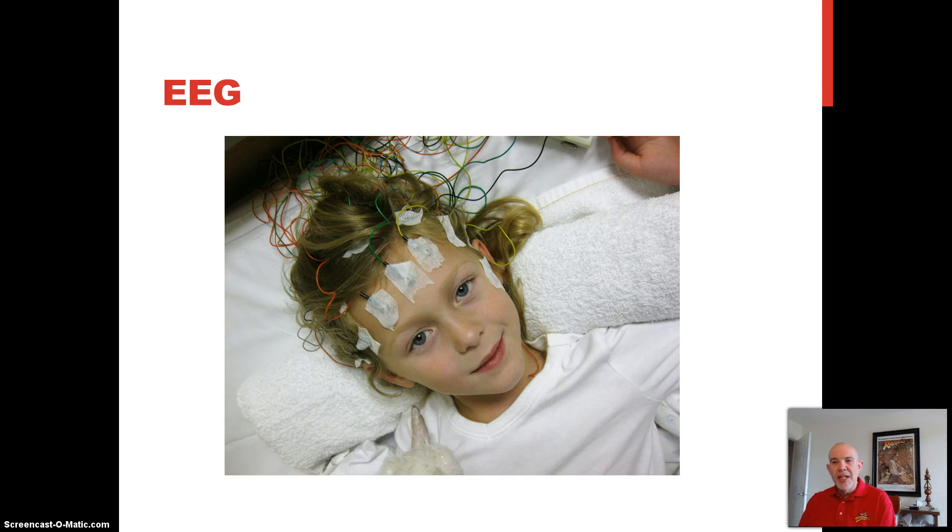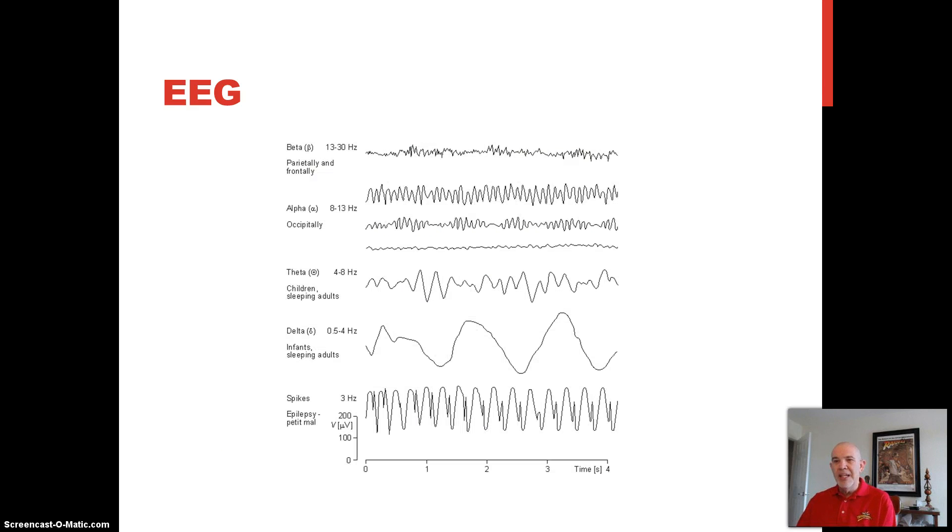In an EEG, electrodes are pasted onto your scalp and record electrical activity from different areas of the brain. The brain does emit, in fact, a weak electrical current, and this electrical activity is magnified and it drives pens to record brain waves in an electroencephalogram that shows the brain waves. Nowadays, it's all done through computers.